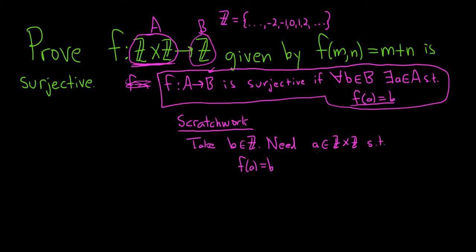So we need to rewrite a a better way, because a is an ordered pair. So let's write it as, let's just say a is mn, so mn equal to b. So we'll just pretend a is mn, because that's what it is, it is an ordered pair. And f of mn, well, that's m plus n, so m plus n is equal to b.